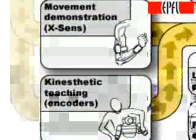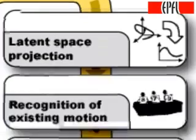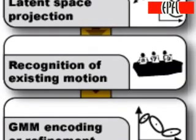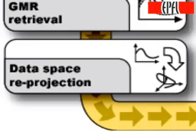In the encoding phase, a latent space of motion is found by linearly projecting the data onto a subspace of lower dimensionality using principal component analysis. Recognition of the gesture is performed in this latent space. If the gesture is not recognized by the existing models, a new model is created. A probabilistic representation of the data is then learned by estimating a Gaussian mixture model. Gaussian mixture regression is used to reconstruct a general form for the signals. Finally, the retrieved data are projected back in the original data space.